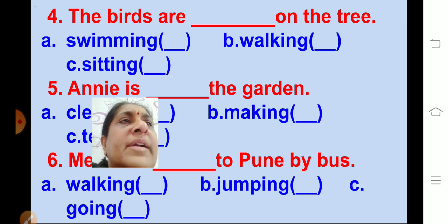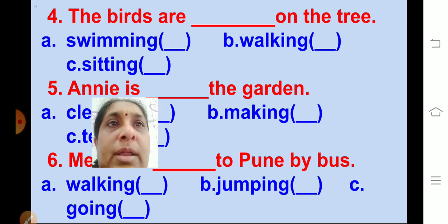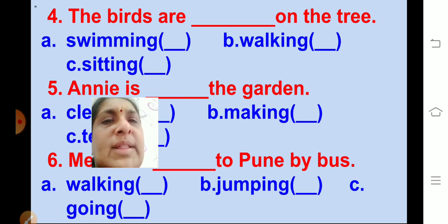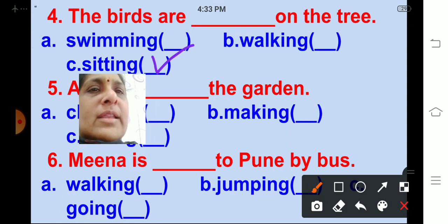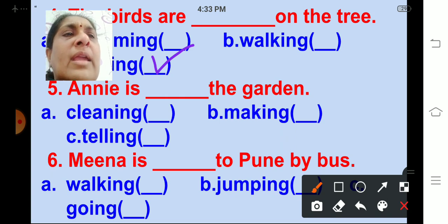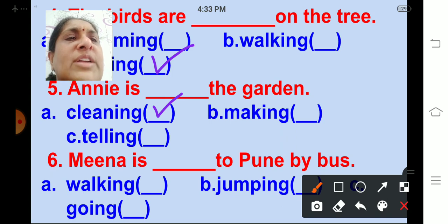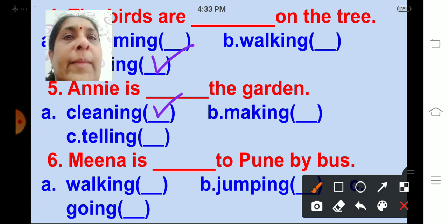The birds are ___ on the tree. Options are swimming, walking, sitting. Correct: sitting. The birds are sitting on the tree. Annie is ___ the garden. Options are cleaning, making, telling. Correct: cleaning. Annie is cleaning the garden. Meena is ___ to Pune by bus. Options are walking, jumping, going. Correct: going. Meena is going to Pune by bus.